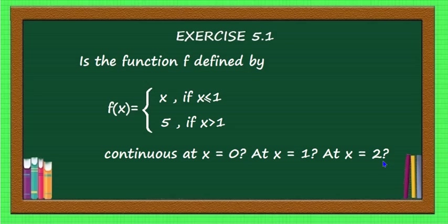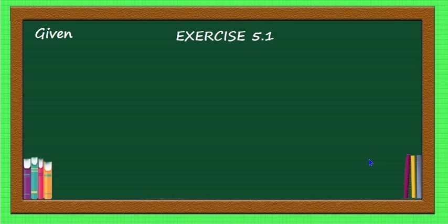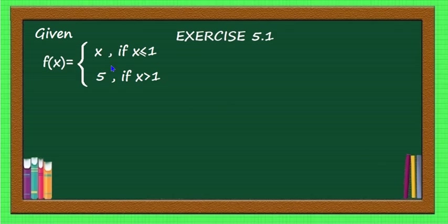Here we have to check the continuity of the function at three different points: x = 0, x = 1, and x = 2. The given function is f(x) = x if x ≤ 1, and 5 if x > 1.